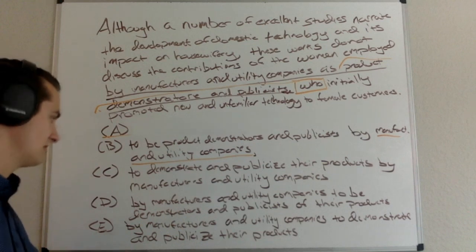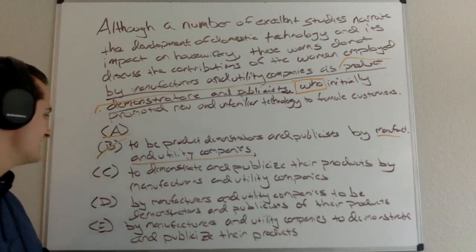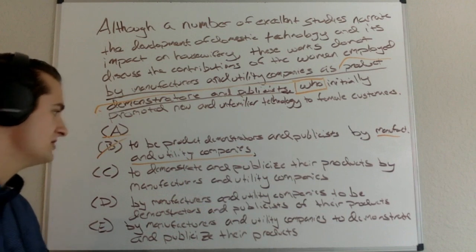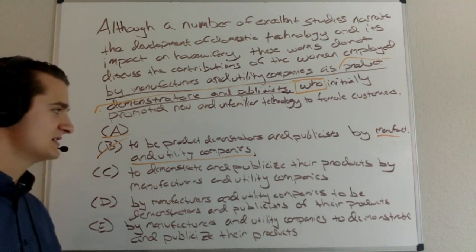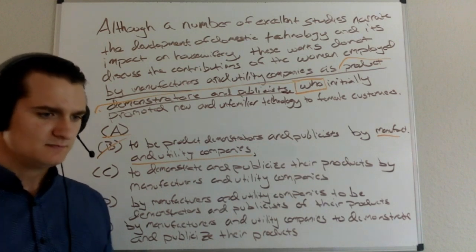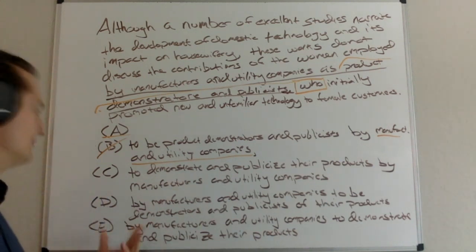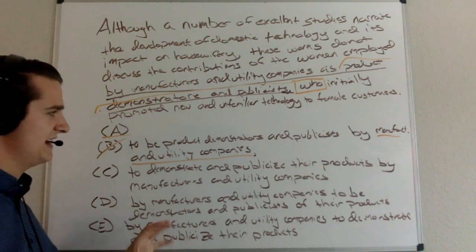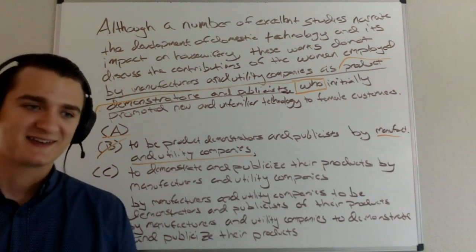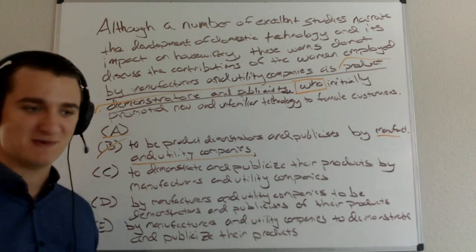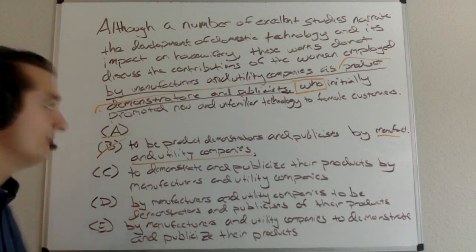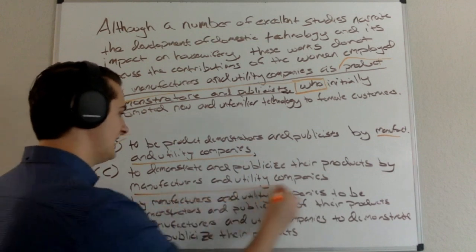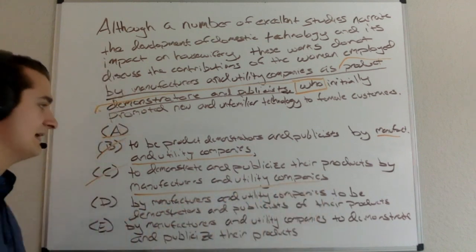I can eliminate B because 'who' refers to the wrong thing. In C: 'women employed to demonstrate and publicize their products by manufacturers and utility companies' — I don't exactly love the use of 'their,' but this is not a pronoun video. Focusing on the modifier: 'who' again seems to modify 'manufacturers and utility companies,' same issue as with B. So I'm going to go ahead and eliminate C.